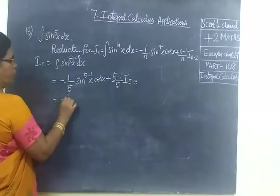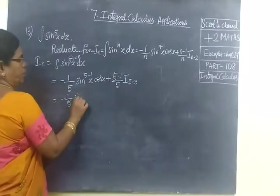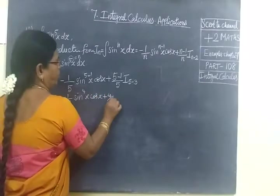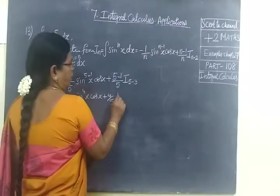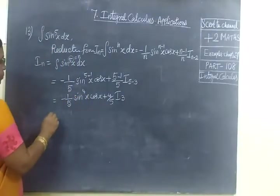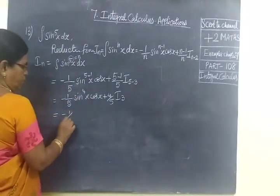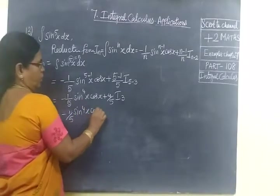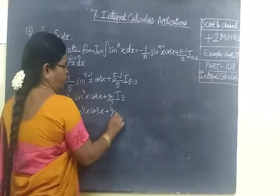So equal to minus 1 by 5 sin power 4x cos x plus 4 by 5 I_3. Now again we want to find I_3. This is equal to minus 1 by 5 sin power 4x cos x plus 4 by 5.